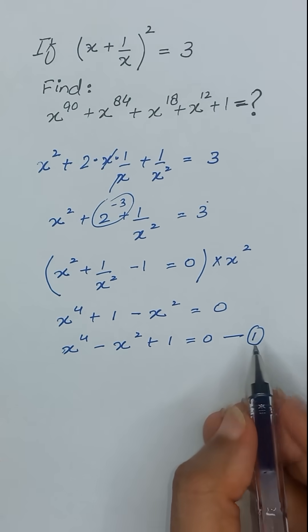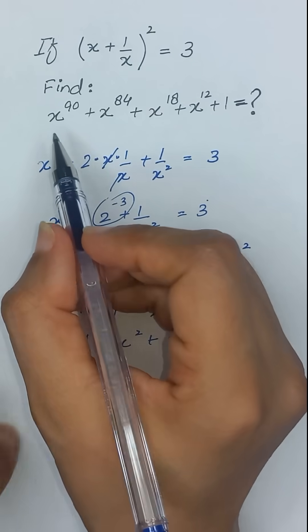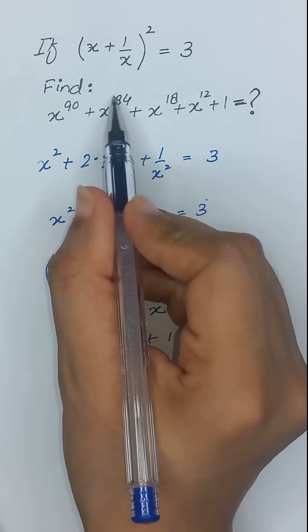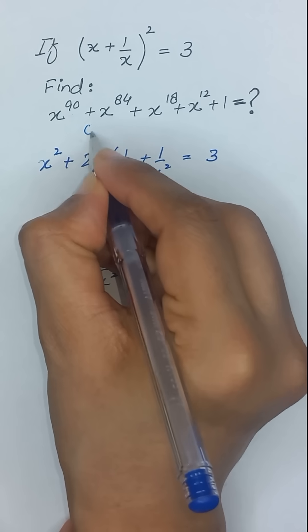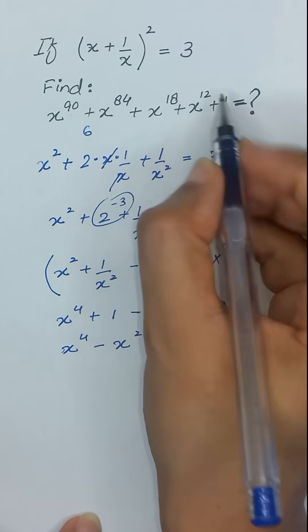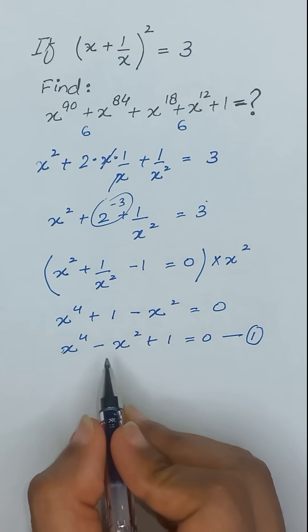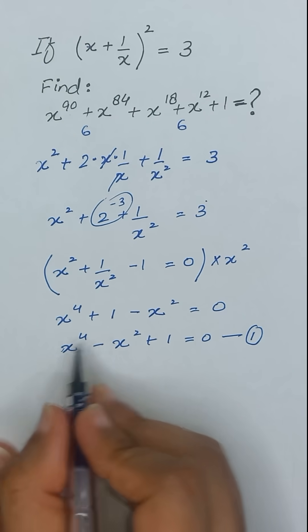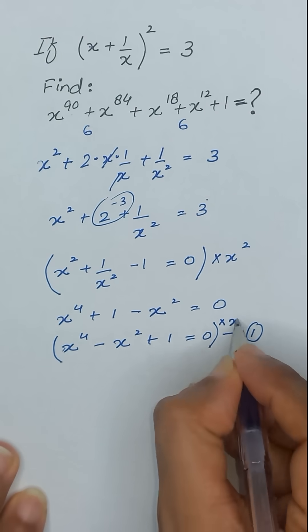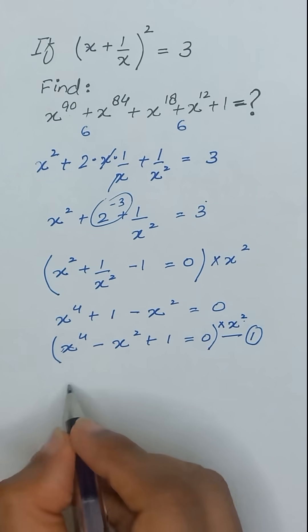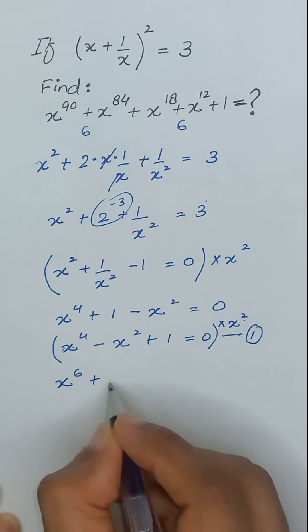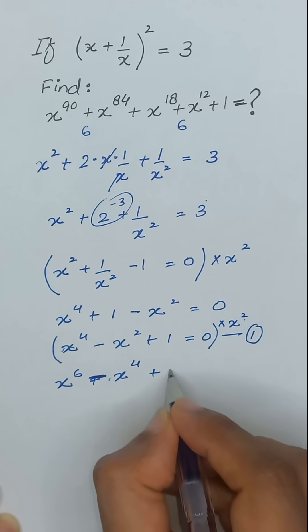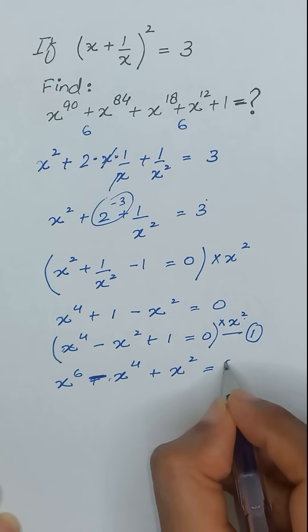Now, between the powers 90 and 84 there is a difference of 6, and similarly 18 and 12 have the same difference of 6, so we will try to make this equation in the power of 6. We multiply equation 1 by x², giving x⁶ minus x⁴ plus x² equals 0.